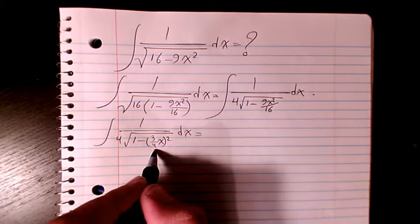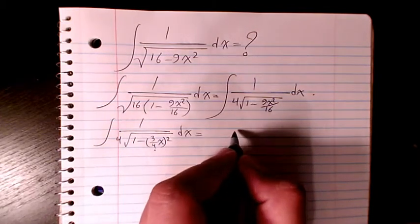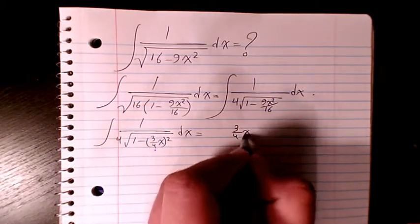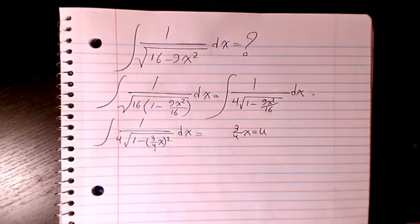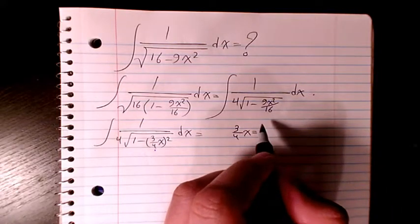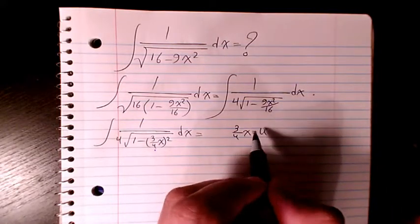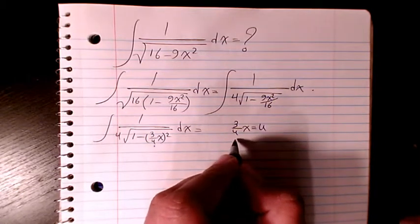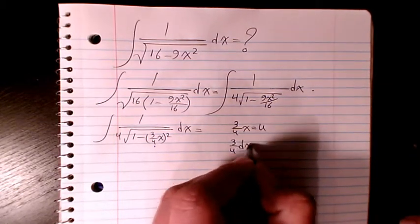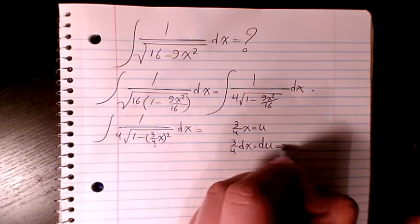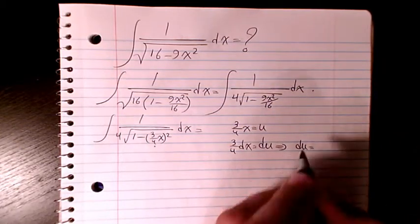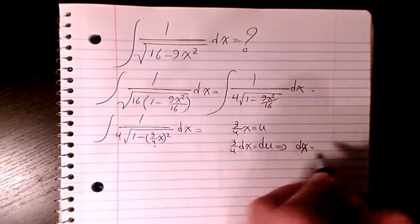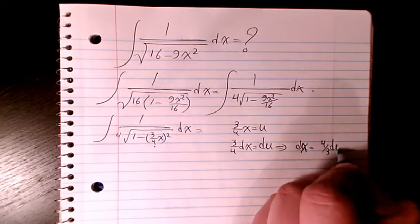3 over 4x is going to be u if I use integration by substitution. So then I can say 3 over 4 dx is going to be du, so dx will be 4 over 3 du.